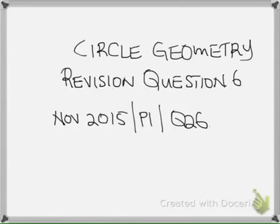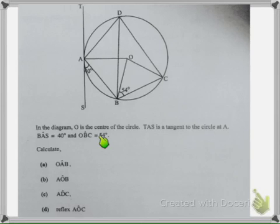Circle Geometry Revision Question 6, November 2015 Paper 1, Question number 26. O is the center of the circle. TAS is a tangent to the circle at A.